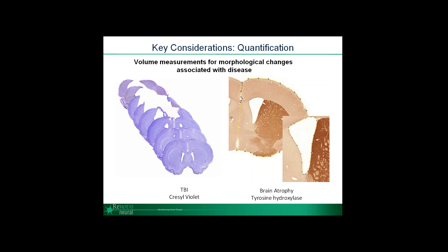Now to the fun part — the quantification. Using histology at a gross level, we can get a lot of volumetric information. For example, here is a brain stained with crystal violet that has had extensive traumatic brain injury. When we stack these images serially, we can compare the size of the lesions during disease or after treatment. Another example of volumetric measurement is whole brain volume — as mice undergo neurodegeneration, brain atrophy can lead to changes in brain size tracked by looking at both tissue volume and ventricle size.